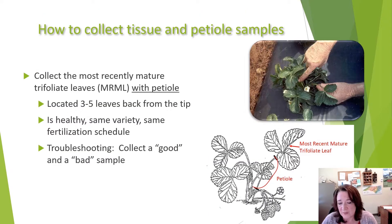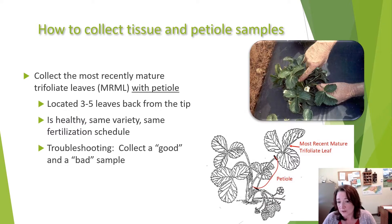To collect tissue samples for strawberry, the correct leaf to select is the most recently mature leaf with petiole, which is about the third to fifth leaf back from the growing point. This is a little difficult to differentiate in strawberry, so a good way to visualize it is that the most recently mature leaf isn't the older leaf laying down on the plastic, and it's not the one sticking up in the middle — it's the one in between those two positions. You want to collect about two handfuls of leaves to get a good representative sample, selecting leaves that are healthy, of the same variety, and under the same fertility program.